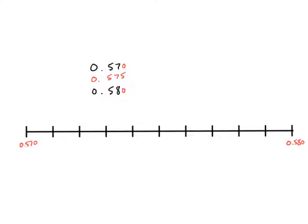We can check that on our number line by placing five hundred seventy five at the midpoint, then counting five hundred seventy one, seventy two, seventy three, seventy four, seventy five, seventy six, seventy seven, seventy eight, seventy nine, five eighty. So it does check out.